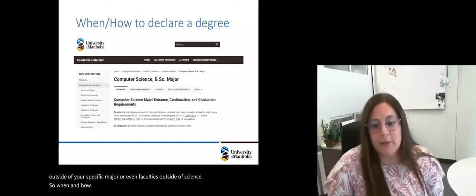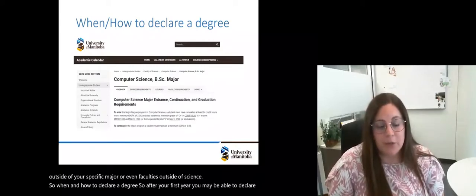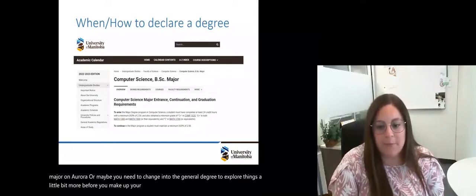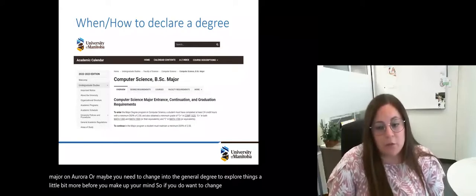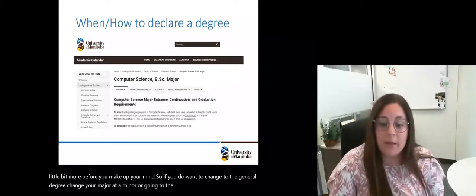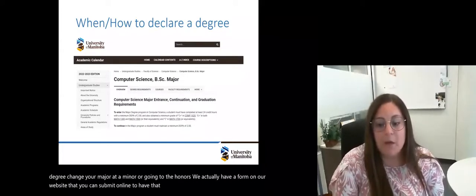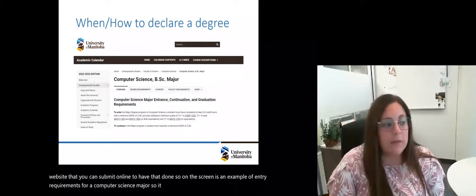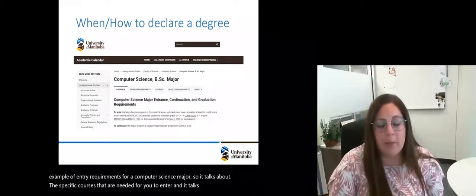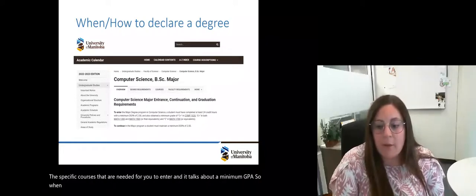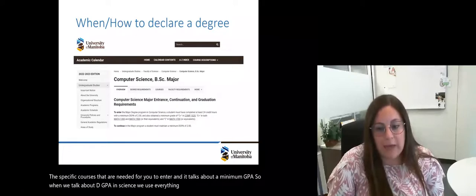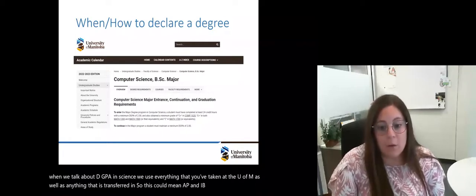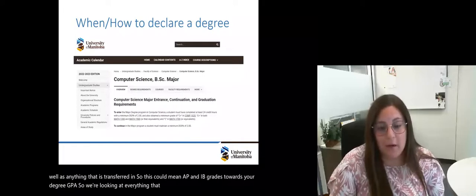So when and how to declare a degree. After your first year, you may be able to declare your major on Aurora or maybe you need to change into the general degree to explore things a little bit more. If you do want to change to the general degree, change your major, add a minor or go into the honors, we actually have a form on our website that you can submit online. On the screen is an example of entry requirements for a computer science major. It talks about the specific courses that are needed for you to enter and it talks about a minimum DGPA. When we talk about DGPA in science, we use everything that you've taken at the U of M, as well as anything that is transferred in. So this could mean AP and IB grades towards your degree GPA.